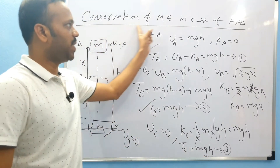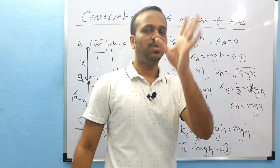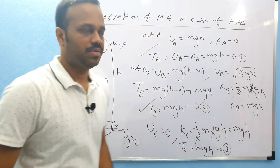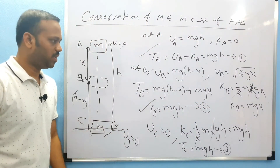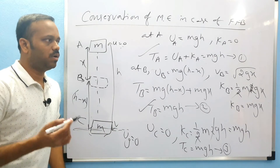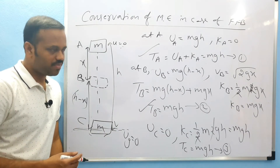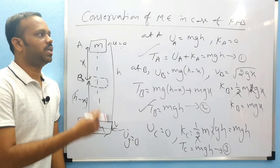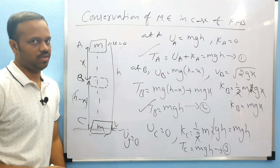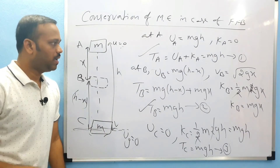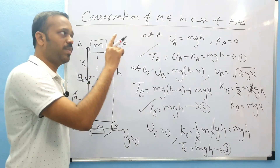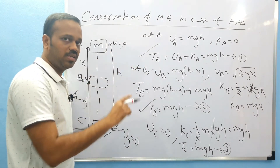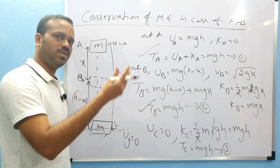At all points you have mgh, mgh, mgh — that means mechanical energy is conserved in a freely falling body. This is a very important question when you go to board exams. Now let's discuss conservation of mechanical energy in the case of a vertically projected body.